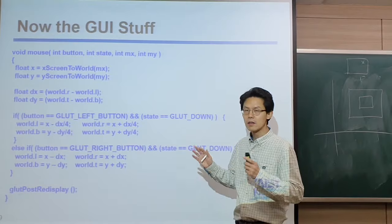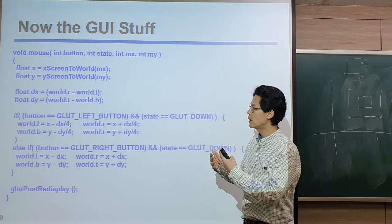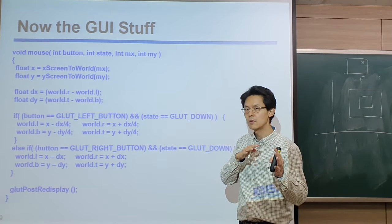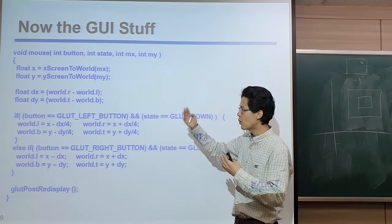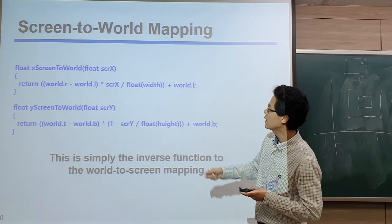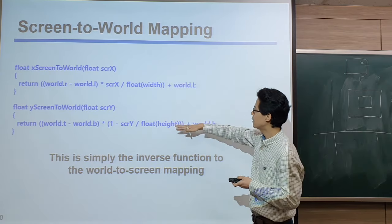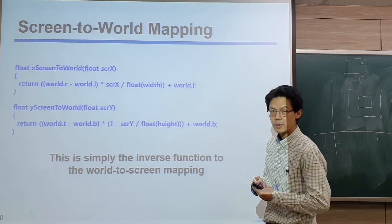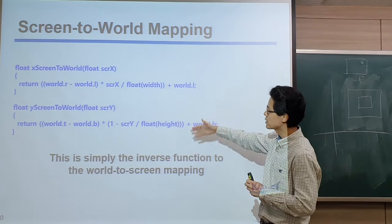The main idea of event-based programming is that many functions are associated with certain user interactions, which are obtained through events passing through the OS generated by user actions and passed to our program. I also mentioned the screen-to-world function — it's simply the inverse function of our world-to-screen mapping. You can just reverse that function and come up with this one very easily.